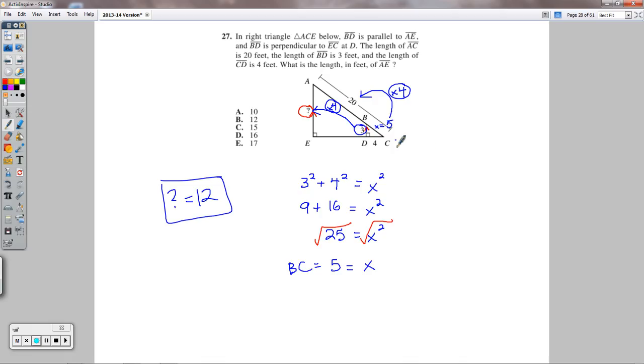If you wanted to, you could set up a proportion as well. We could say that 5 over 20 equals 3 over the question mark. So 5 is to 20 as 3 is to this length. Cross multiply: 5 times the question mark equals 60. Divide by 5, and the question mark equals 12.